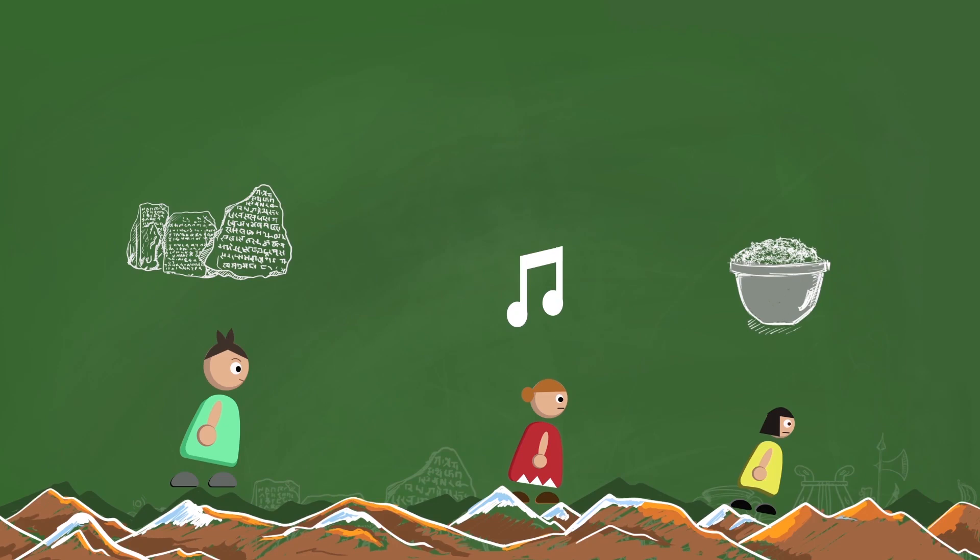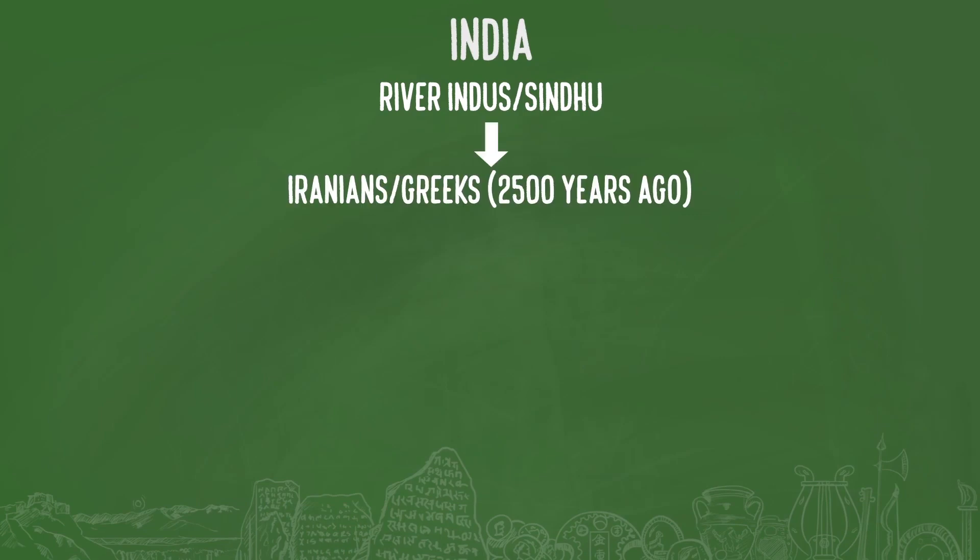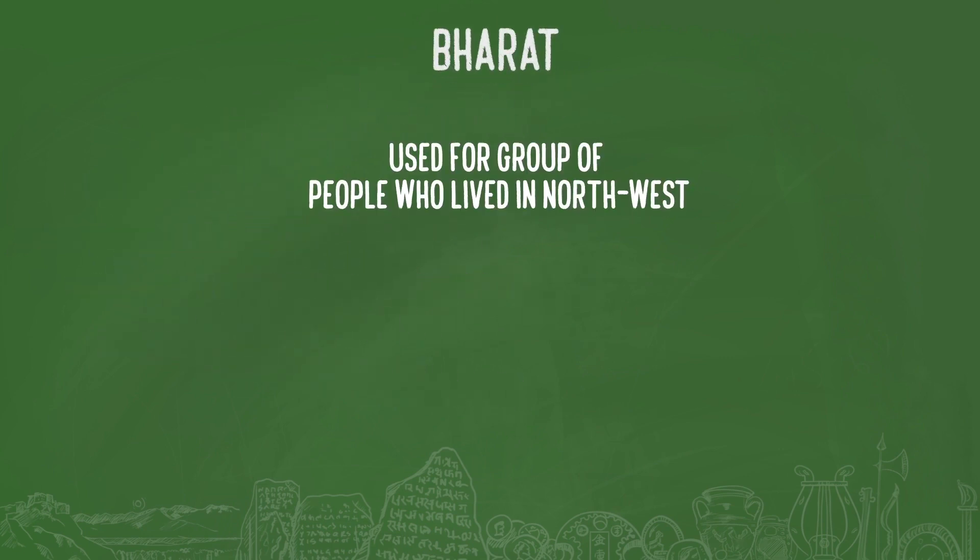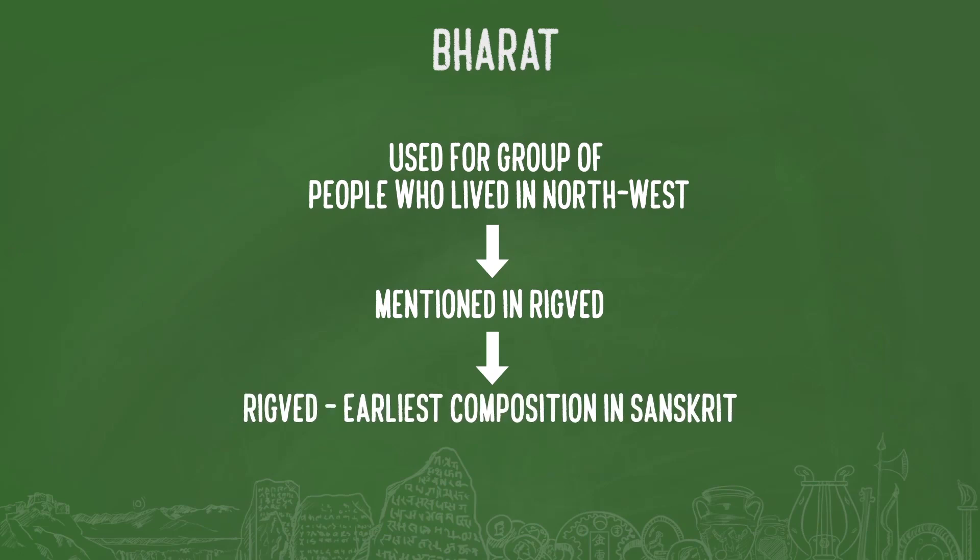Let us talk about the two words we often use for our country, India and Bharat. The word India comes from the river Indus, called Sindhu in Sanskrit. Iranians and Greeks, who came from the northwest side about 2500 years ago to India, knew Indus. The land east of Indus is called India. The name Bharat was used for a group of people who lived in northwest, which is mentioned in Rigveda. Rigveda is considered the oldest Sanskrit composition.